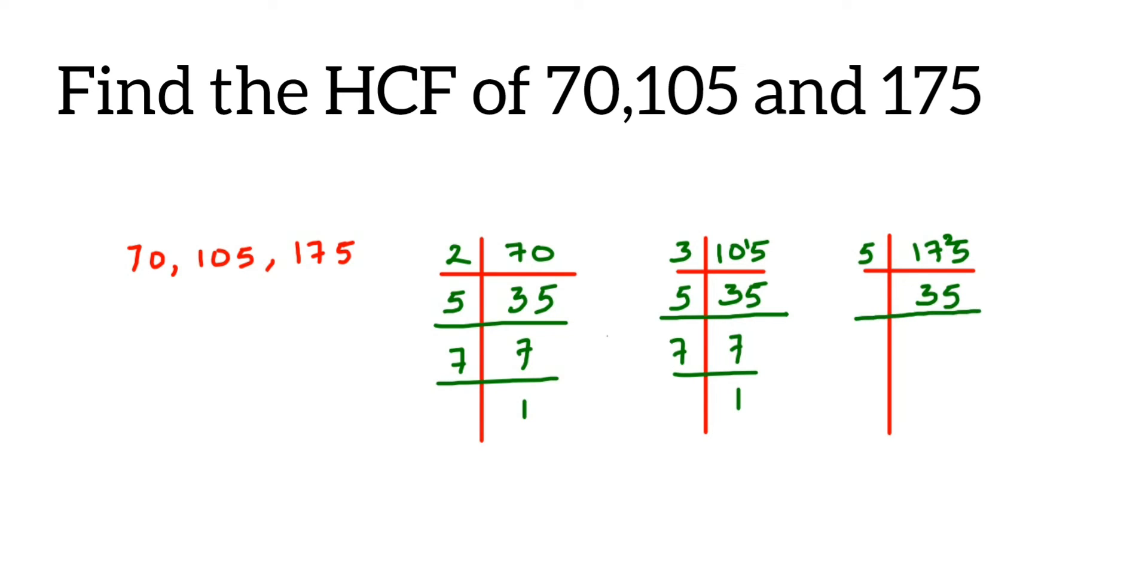Once we have done this, we have to take all these prime factors and express them in that way, like express in terms of prime numbers or prime factors. So 70 can be written as 2×5×7, and 105 can be written as 3×5×7. Next we have 175, which can be written as 5×5×7.